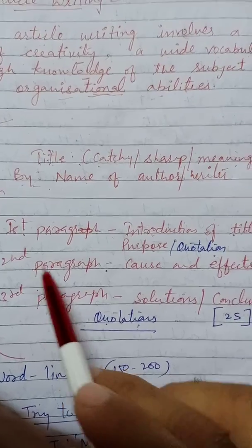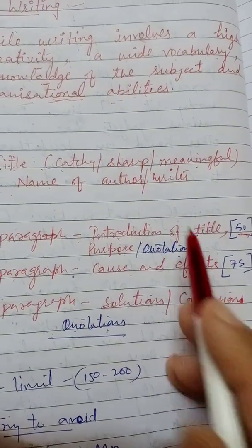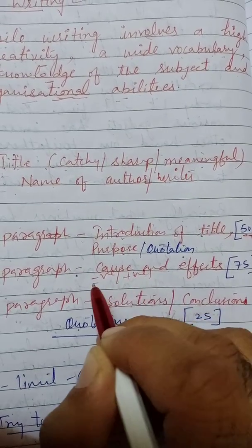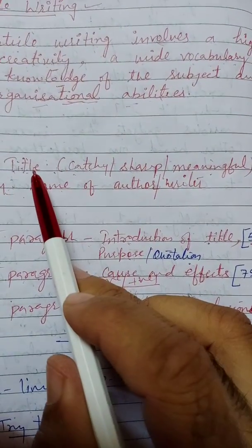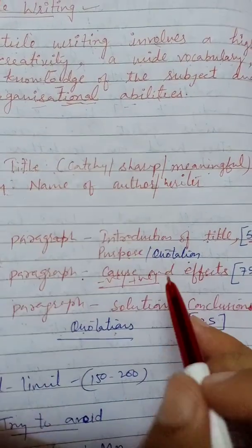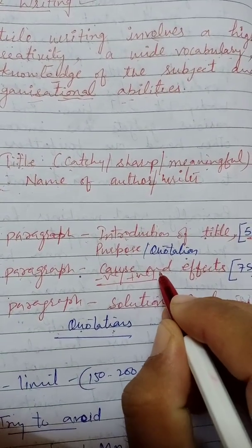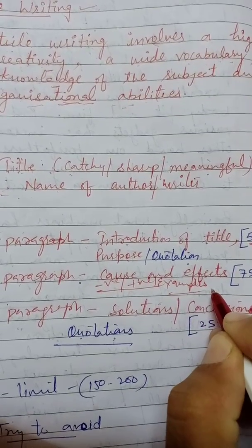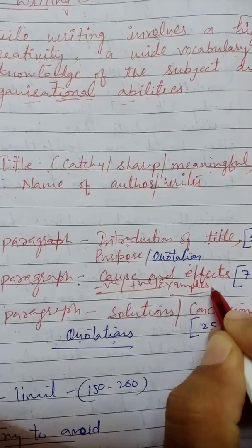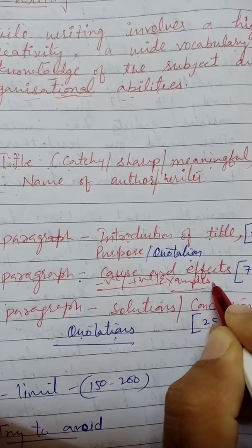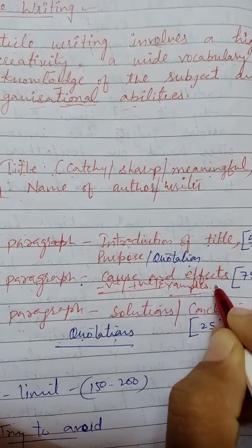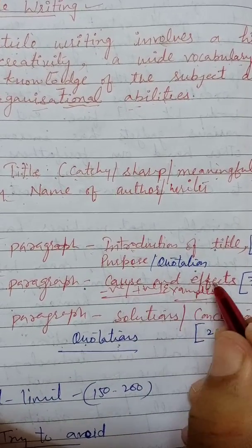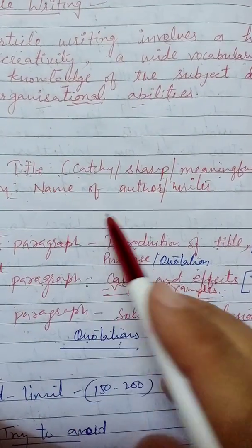The second paragraph contains cause and effect — the negative as well as positive points of the concerned title on which the article is being written, with examples. As I told you during speech writing, examples should be well known to the public, not known only to one particular person. So in paragraph two, write the causes and effects of the particular title.